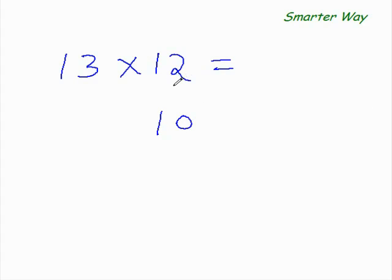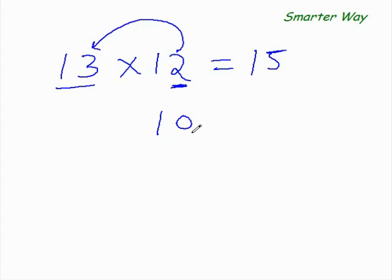So since 12 is 2 more than the base, add this 2 — that is this digit — to this entire number. 13 plus 2 is 15. And since base 10 has 1 zero, so there is one place more to go. 3×2 is 6, and that's your answer. Isn't that simple? You bet it is.